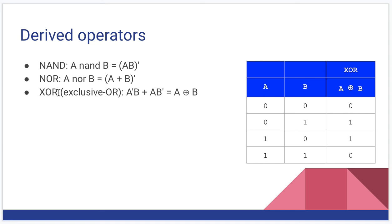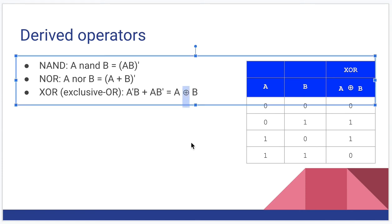One we might use a little bit is called XOR, also known as the exclusive or. And there's a formula for it, A naught and B, OR, A and B naught. And we even have a special symbol for it. It's an OR sign, a plus, with a circle around it.